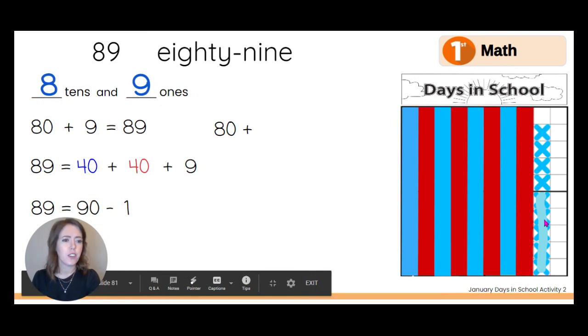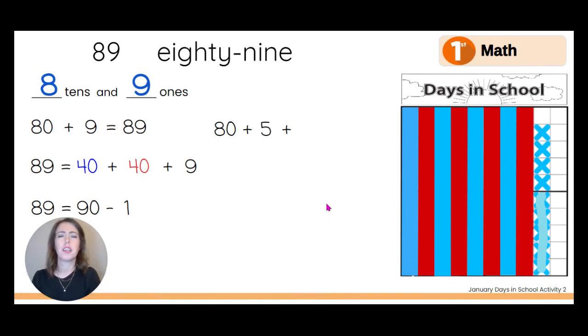And then half of a 10 rod right here is 5. So 80 plus 5 plus, there's still more, right? Yes. But let's put a blank, like a blank, like a missing number. And if you have 80 plus 5 plus some more, you'll get 89.